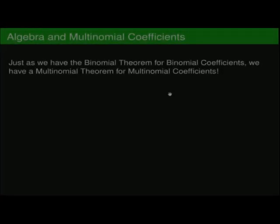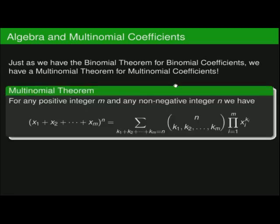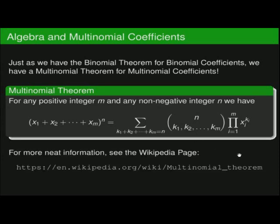Just as we have a binomial theorem for binomial coefficients, we have a multinomial theorem for multinomial coefficients. The multinomial theorem states that for any positive integer m and non-negative integer n, (x1 + x2 + ... + xm)^n equals a sum of terms x1^(k1) · x2^(k2) · x3^(k3) · ..., where the coefficients are our multinomial coefficients. The multinomial theorem is pretty handy and will come up again in other videos. For more information, check out the Wikipedia page on the multinomial theorem.